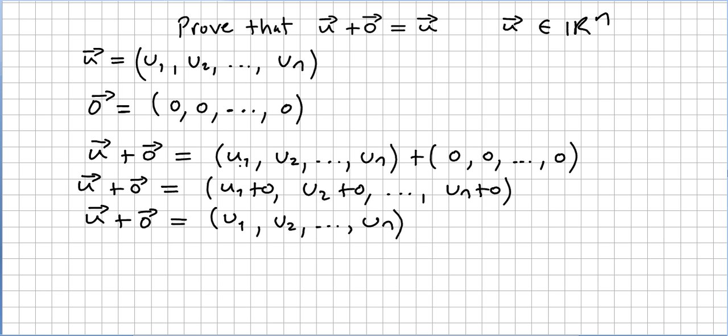So we are going to add u1 plus 0, u2 plus 0 till u n plus 0. But the components are real numbers. So here we follow real numbers. What is u1 plus 0? u1 plus 0 is u1. u2 plus 0 is u2 till u n.